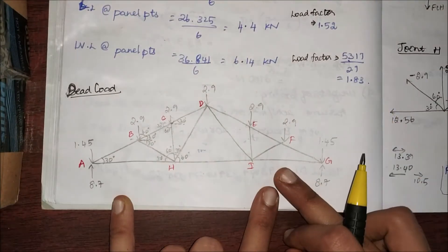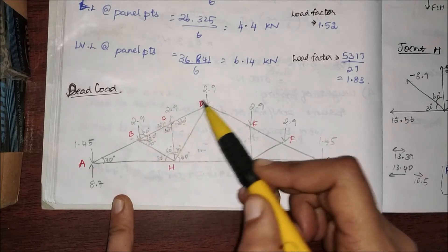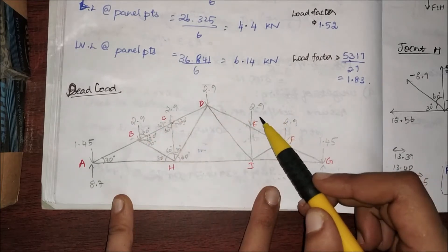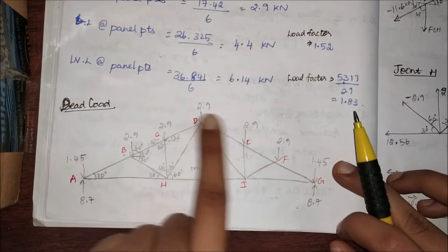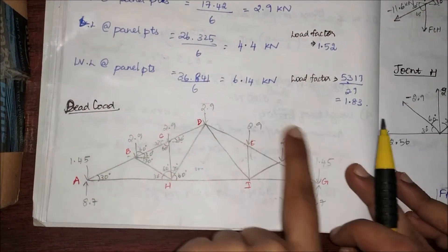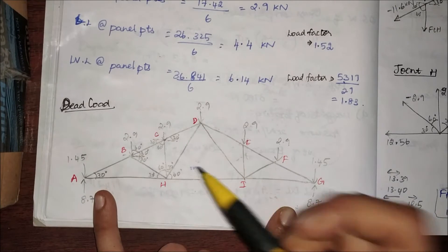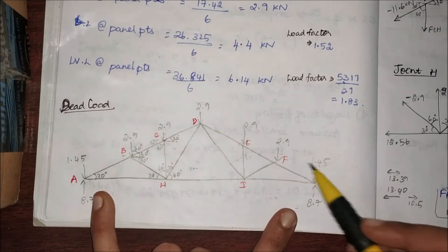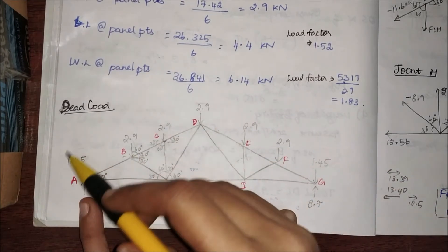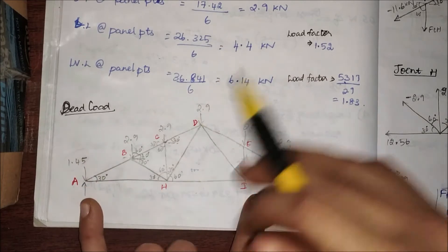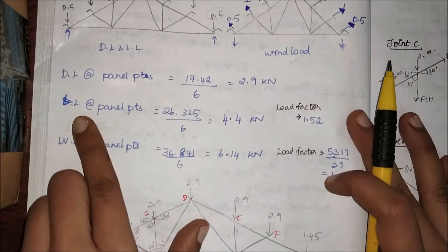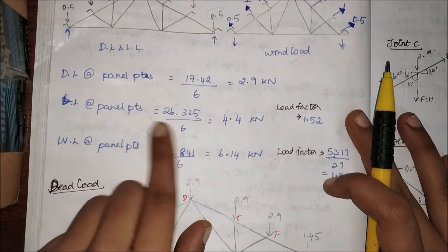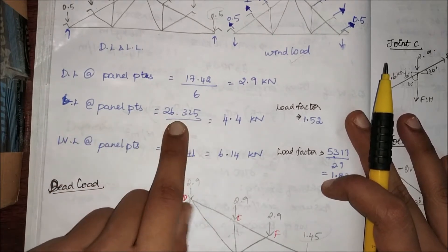Therefore at my panel points I'm going to place 2.9, 2.9, 2.9 over these points, and at my edges only half of that — 1.45. When you add all of these: 2.9 + 2.9 + 2.9 + 2.9 + 2.9 + 1.45 + 1.45, you will get 17.42. That is the concept here.